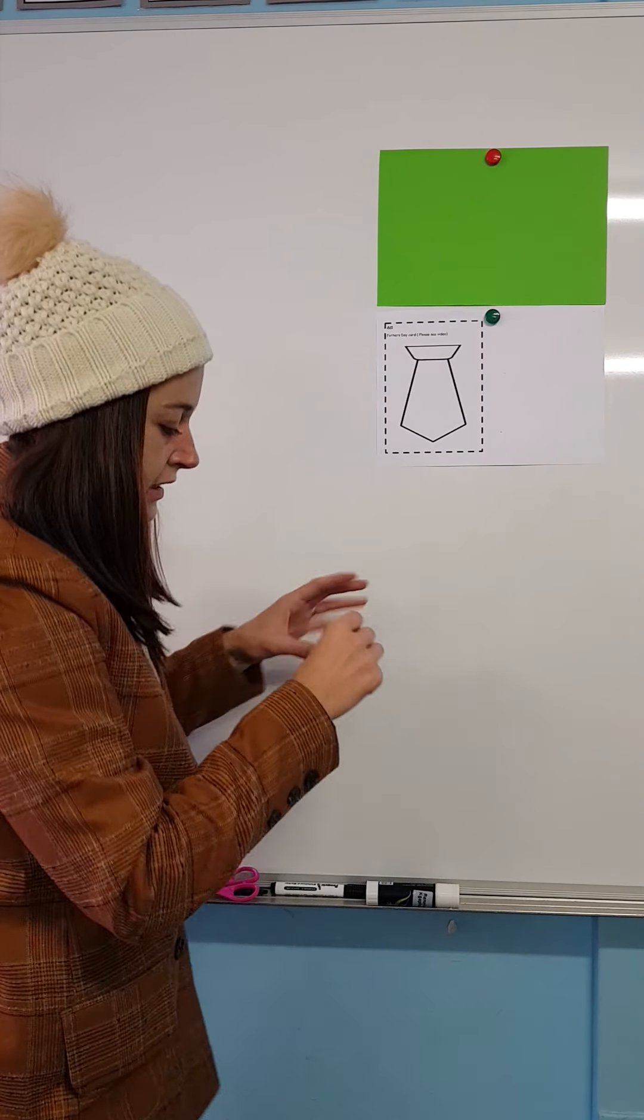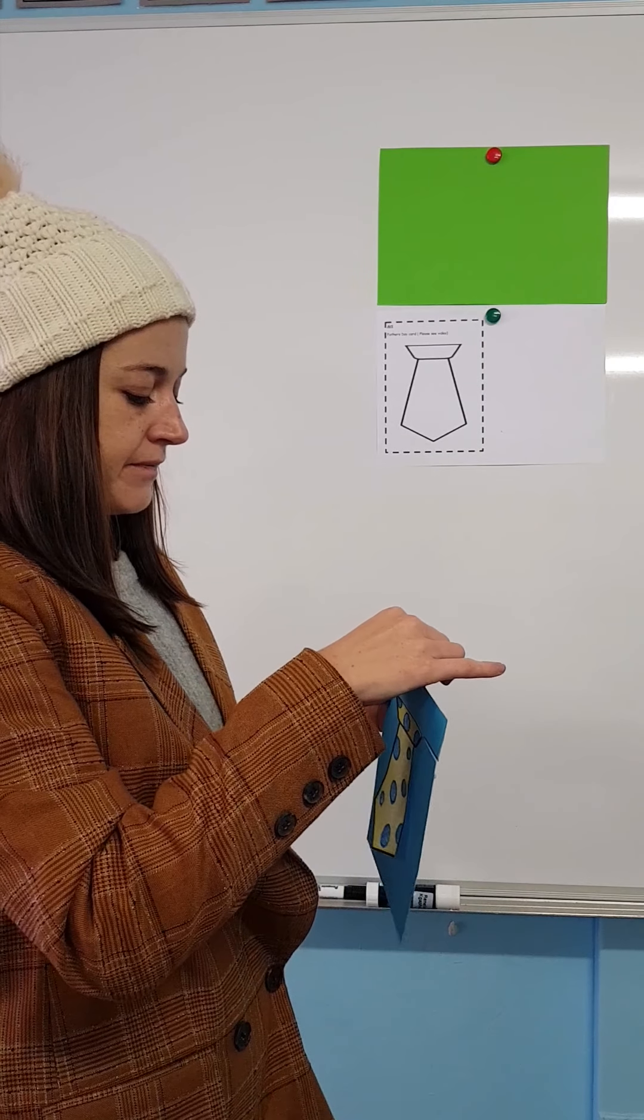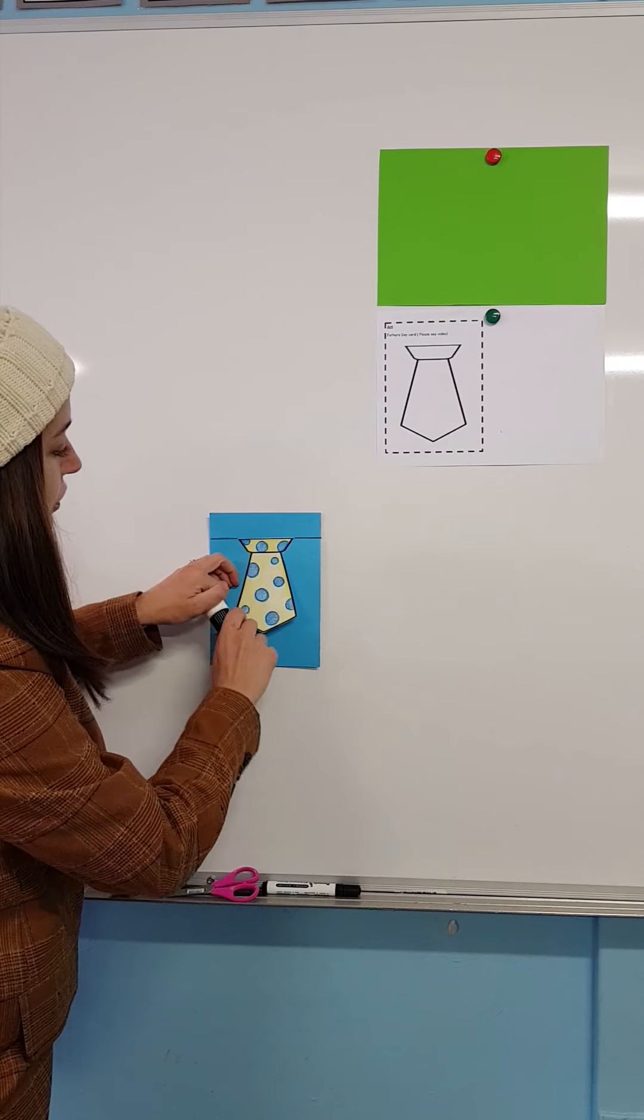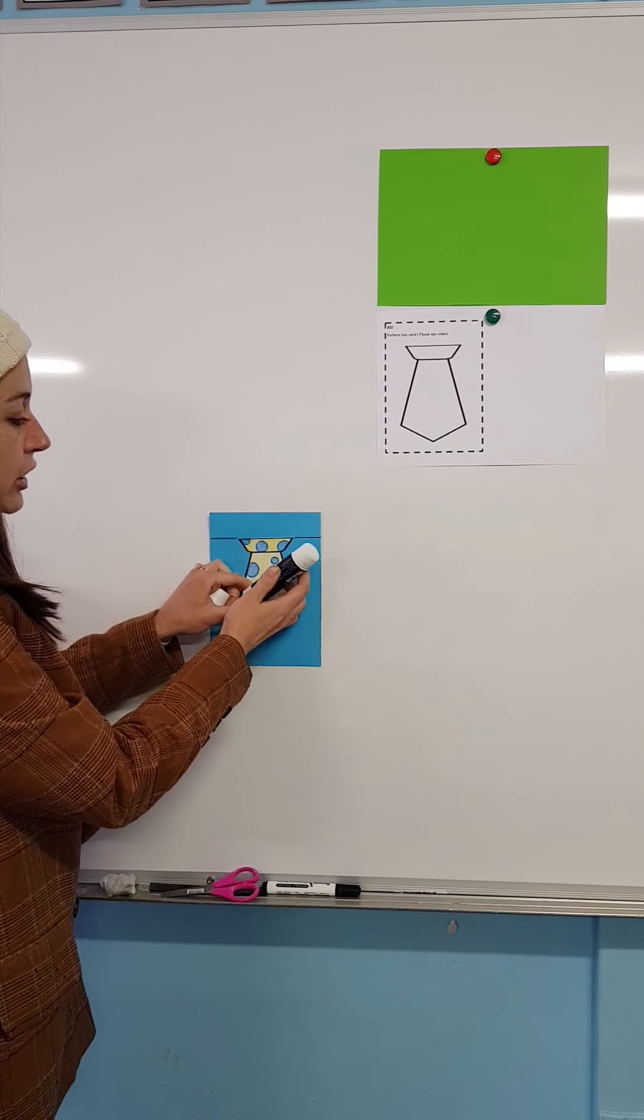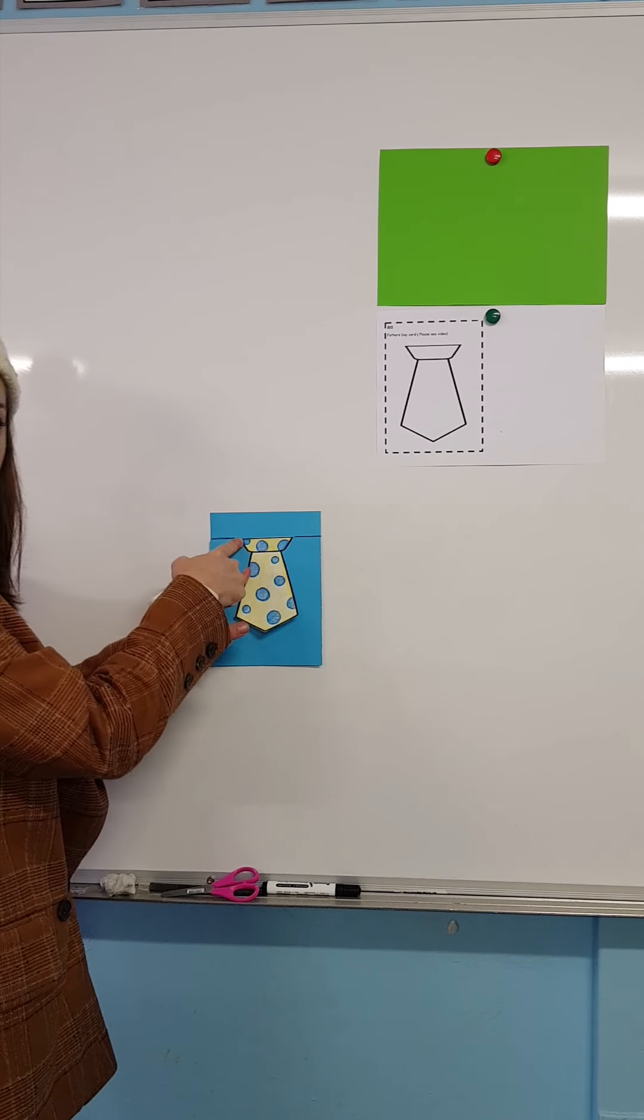All right, now what you're going to do, you just take the press stick off. So now I want you to glue, put glue on the two corners of your tie.